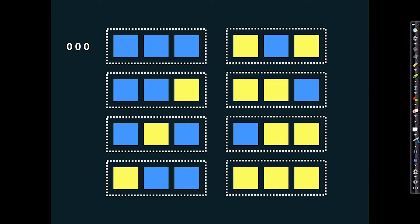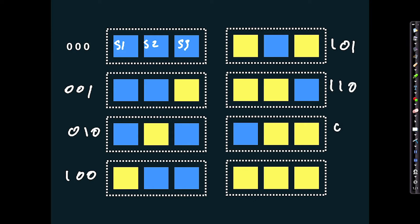Now we've brought together three systems: S1, S2, and system three. Again each can exist in the blue or yellow state, but this time there are eight possible states: 000, 001, 010, 100, 101, 110, 011, and 111. By bringing together three two-state systems we now generate a system with a much larger number of states.